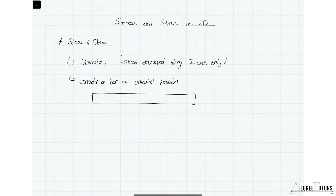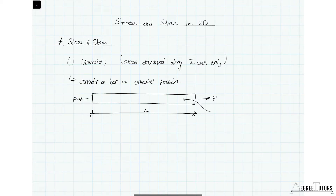We have our bar in tension with a tensile force applied to both ends. The bar has a length L and a cross-sectional area A. When it's in tension it gets longer by some amount, which we're going to call delta L.